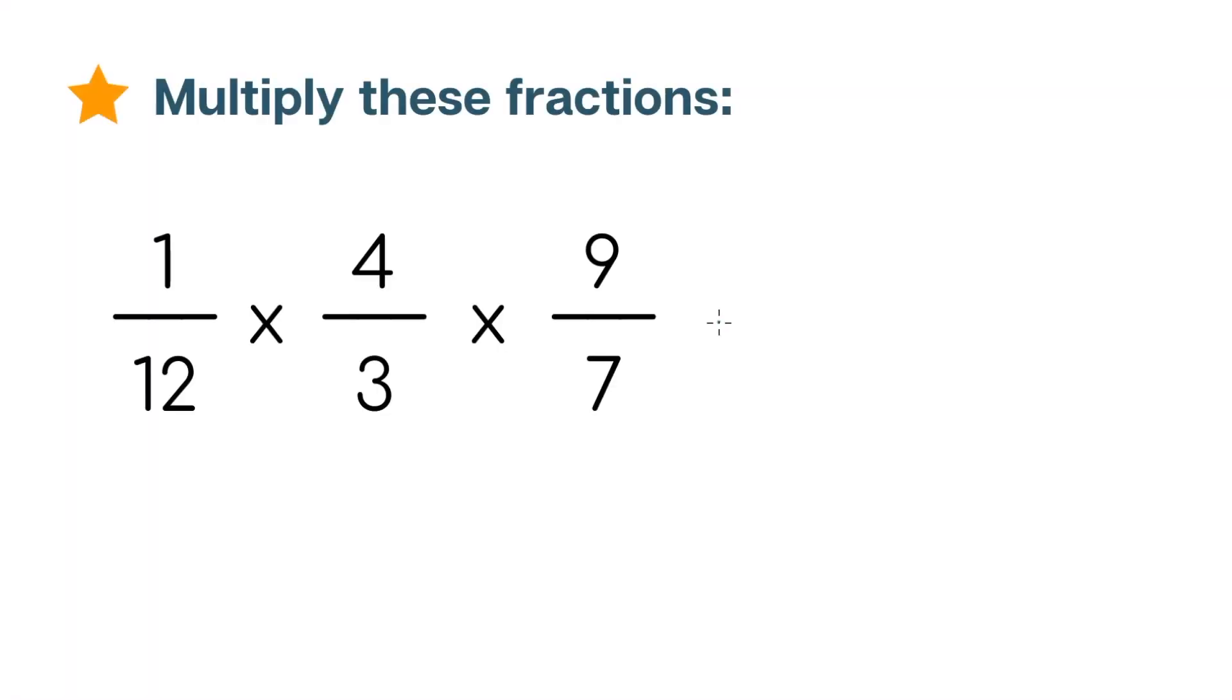Alright, let's do a final challenge problem. This time we have 3 fractions. Our approach is going to be the same where we can multiply all of the numbers in the numerator to get the numerator of our answer, then multiply all of the numbers in the denominator to get the denominator of our answer. However, we can use what we just learned about cross-multiplication to make this problem a lot easier for us.